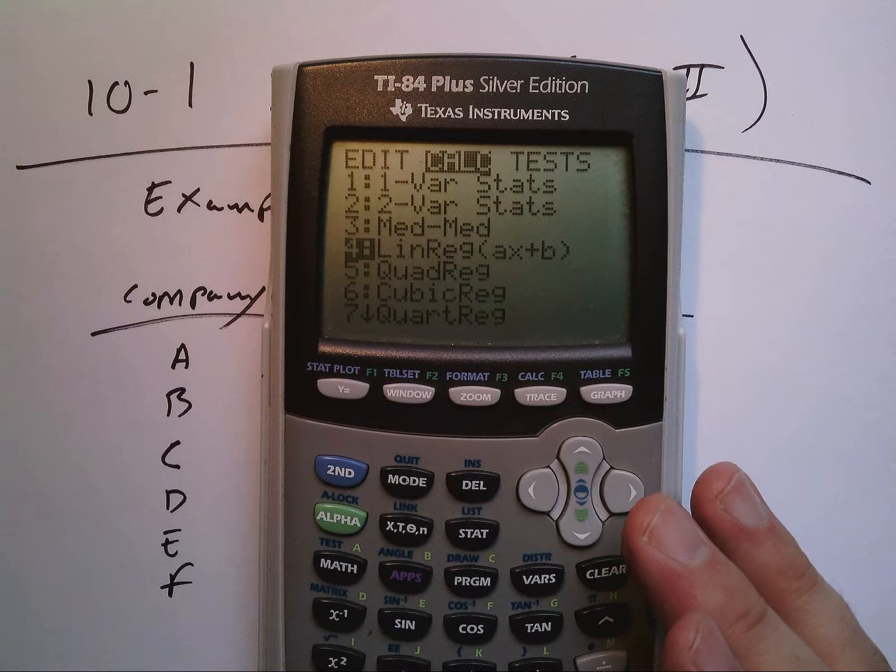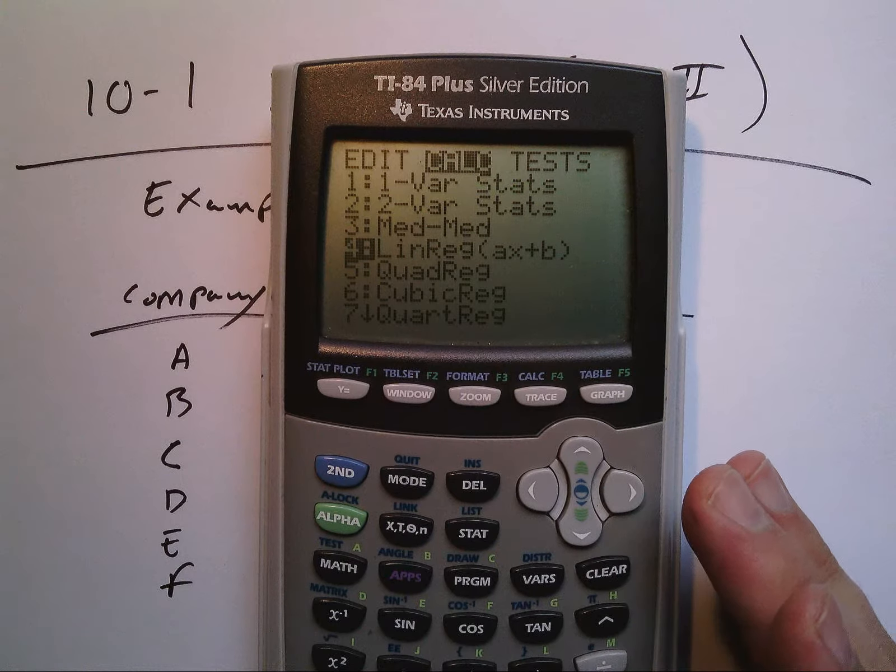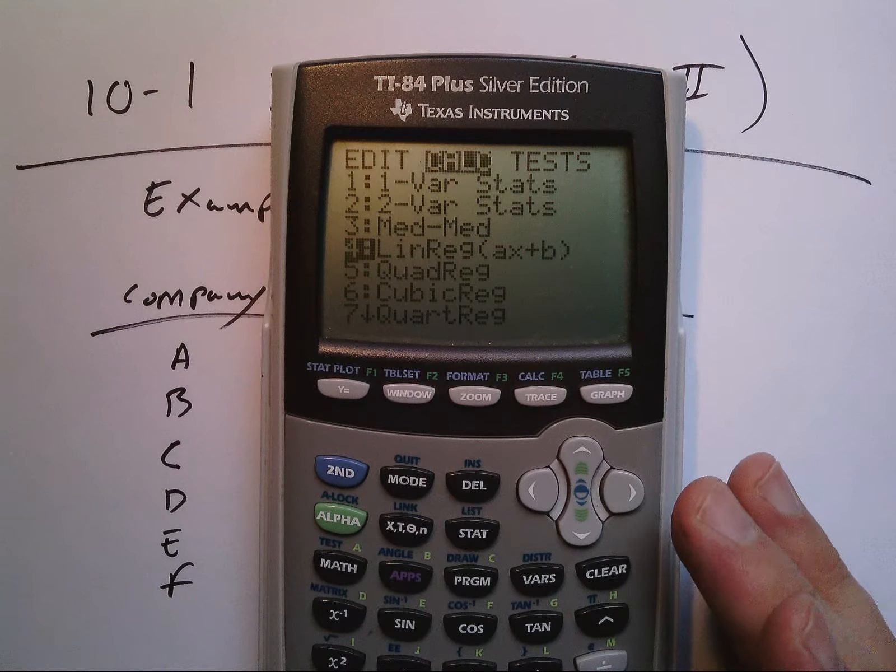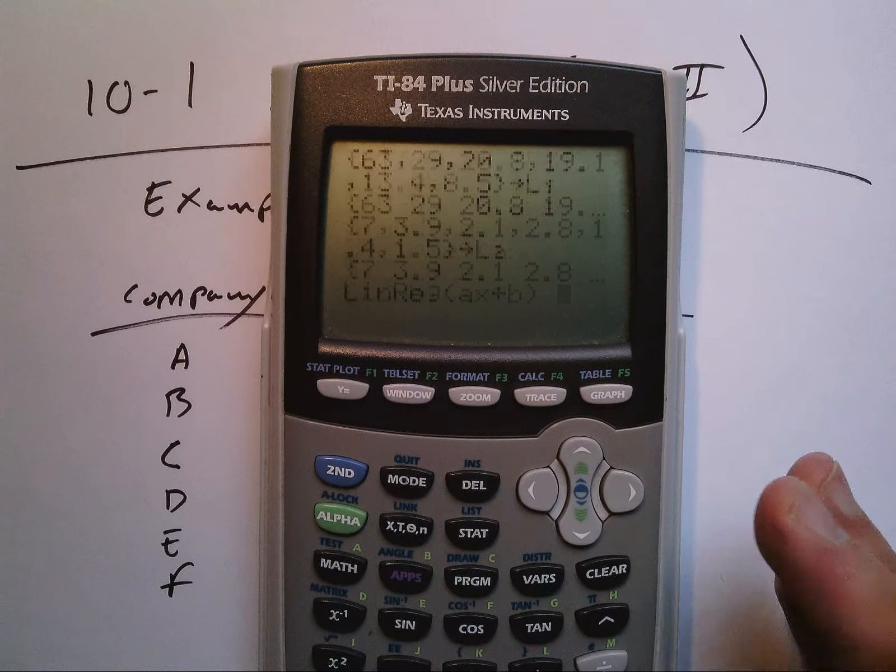But for now, this is how we can get our r value without going through the long process the book wants us to go through. If you're using an 84c or one of the new 84 pluses, they're going to drop down a special menu.